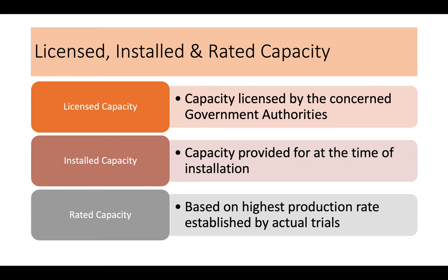There are three types of capacity: licensed capacity, installed capacity, and rated capacity. Licensed capacity is the capacity authorized by the concerned government authorities — the amount you are allowed to produce. Installed capacity is the capacity in place at the time of installation under ideal circumstances. Rated capacity is the highest production rate actually established in reality in the plant.